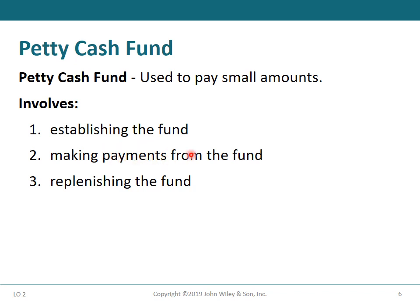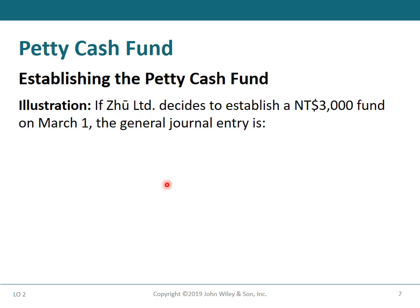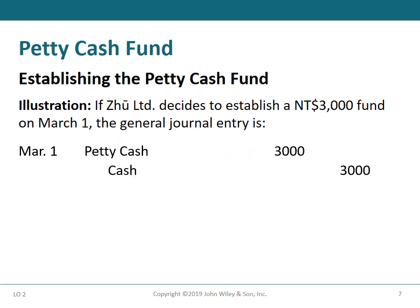Step two is making payments from the fund (صندوق المصروفات النثرية). Step three is replenishing the fund — restoring the amount spent. For example, assume a $3,000 petty cash fund is established on March 1. The general journal entry is: Petty Cash debit $3,000, and Cash credit $3,000.